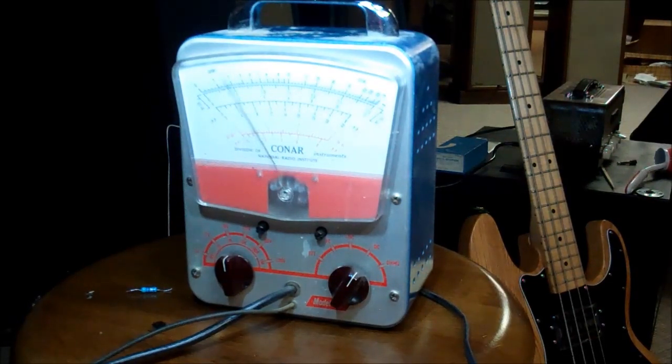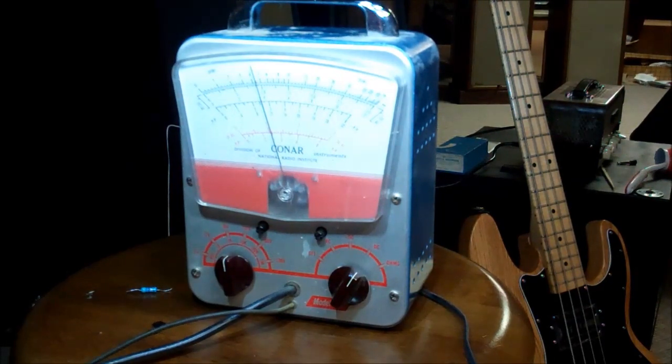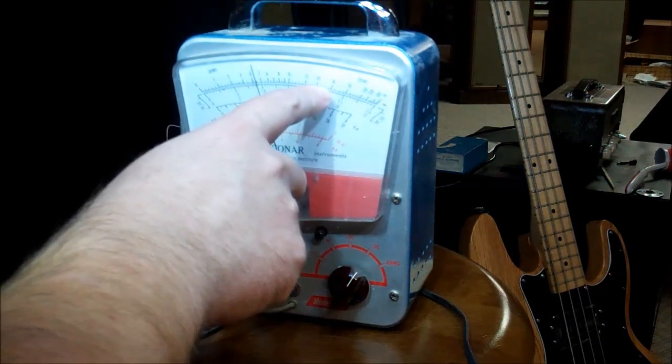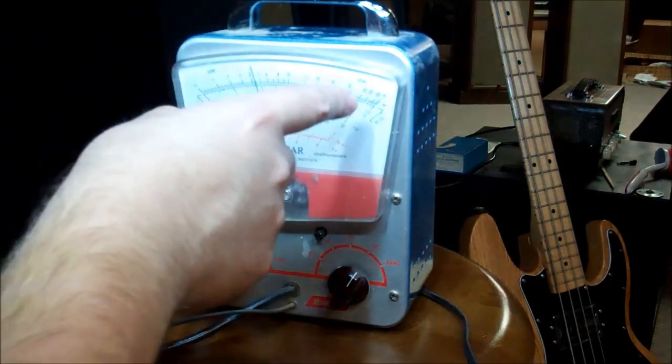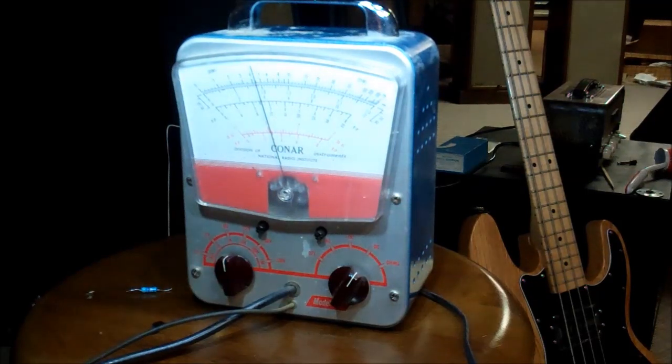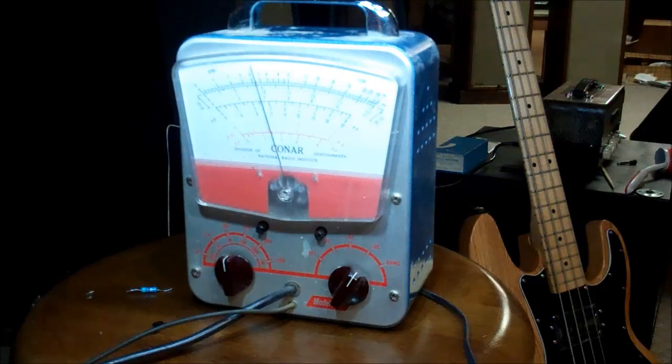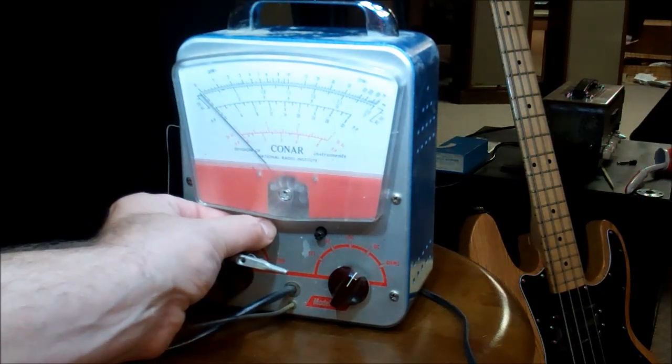We'll put the probe in the positive and let's see if we actually get a reading. We do. Our scale should be between 1 and 30, so we're at 30 at the peak, so that would be 3.0. The negative just slipped off.